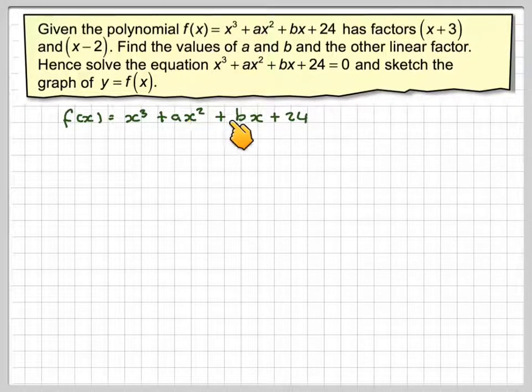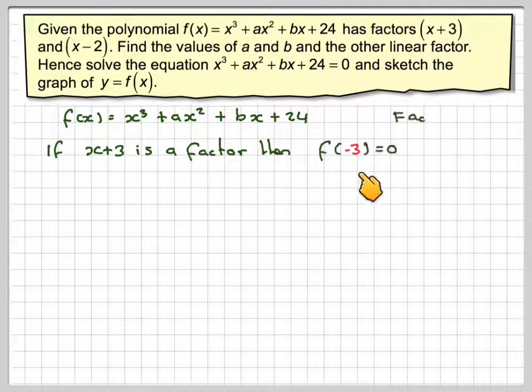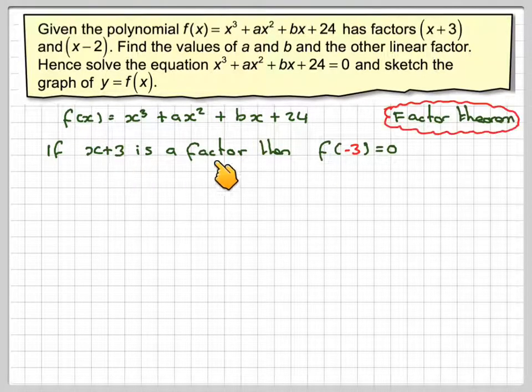Normally, if there's two unknowns, the way to go about it is to form simultaneous equations. So, if x + 3 is a factor, then f(-3) will be equal to 0 because of the factor theorem.